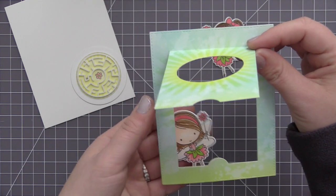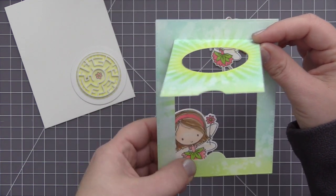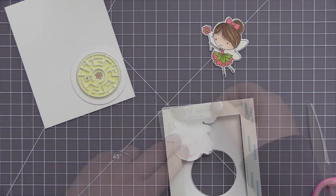You do want to use a really strong adhesive, because this is an interactive card and people are going to be opening it and closing the little panel there in the front. You want to make sure that the adhesive you have around the outside is really gonna hold to that card base and it's not gonna pull apart.